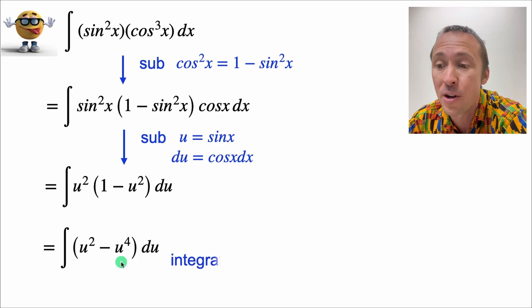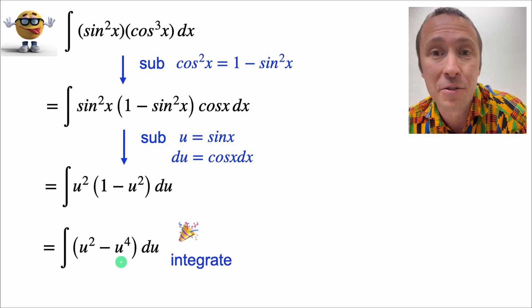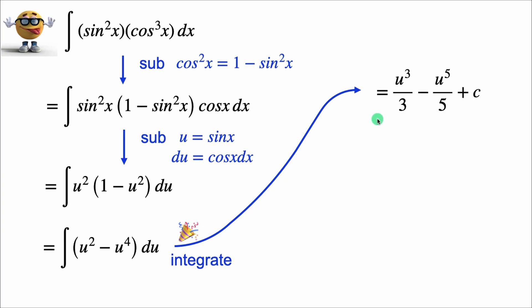So u squared minus u to the fourth and we can now party. It's the reverse power rule giving us this in all its glory.